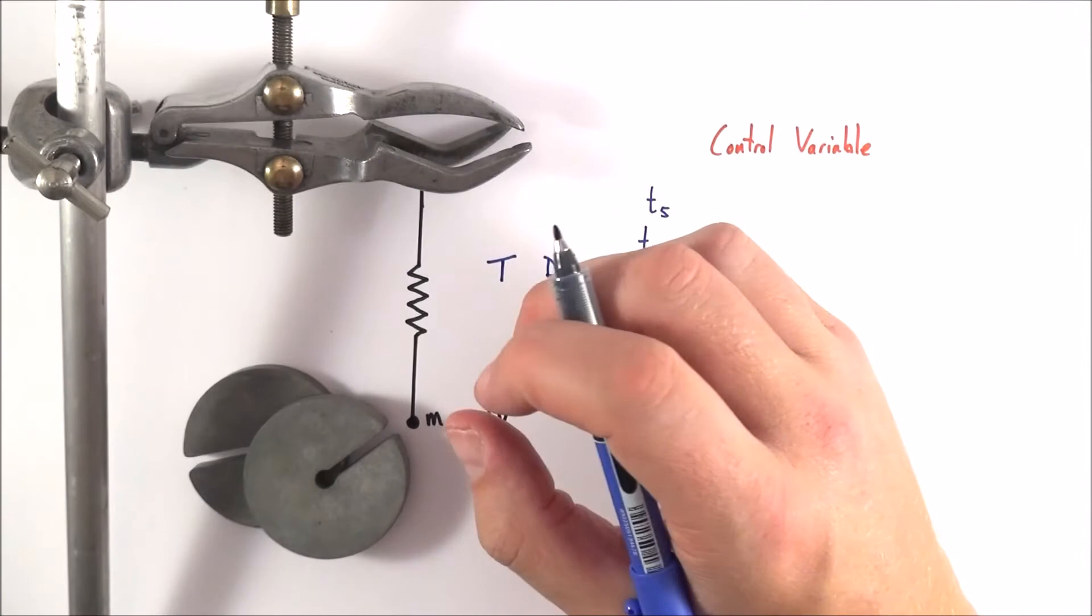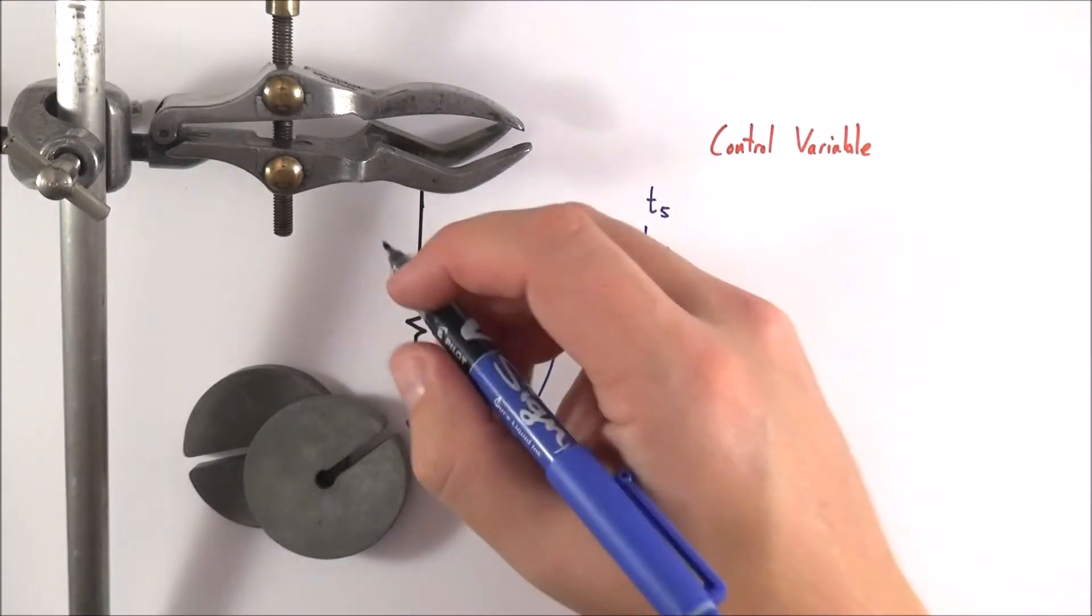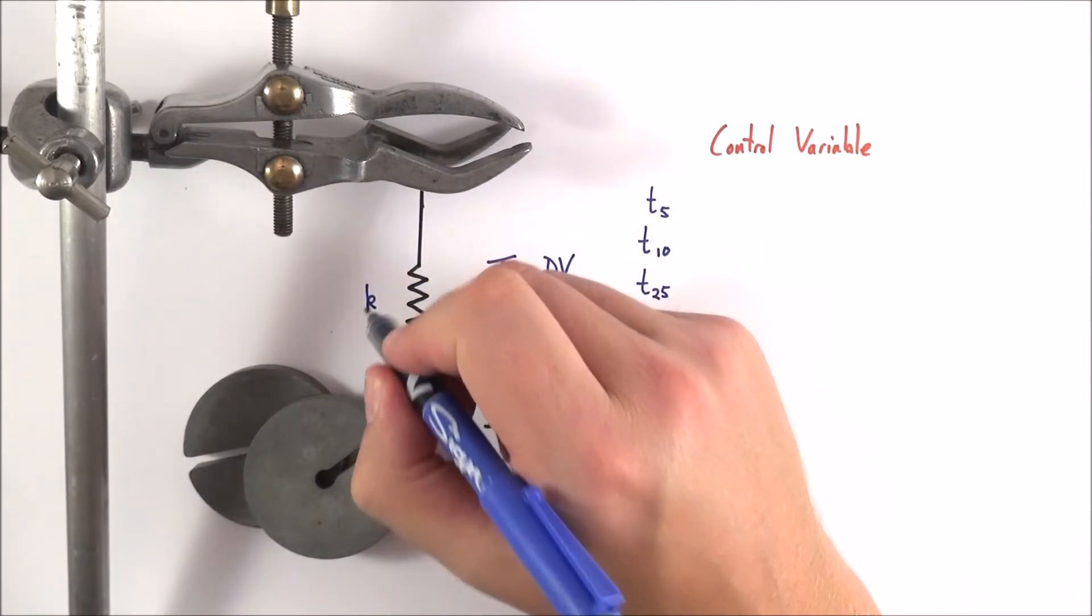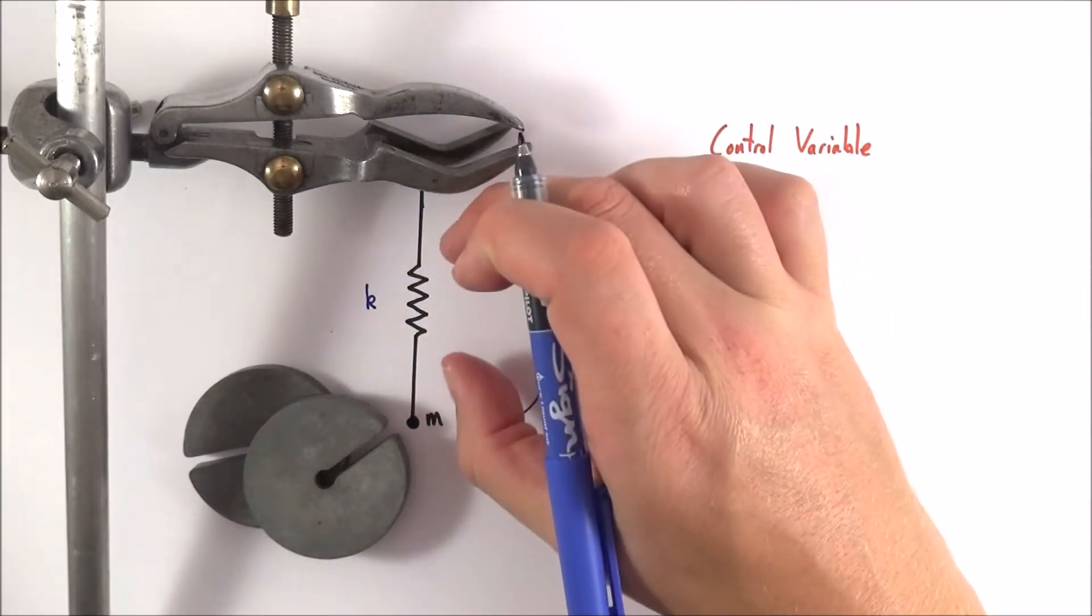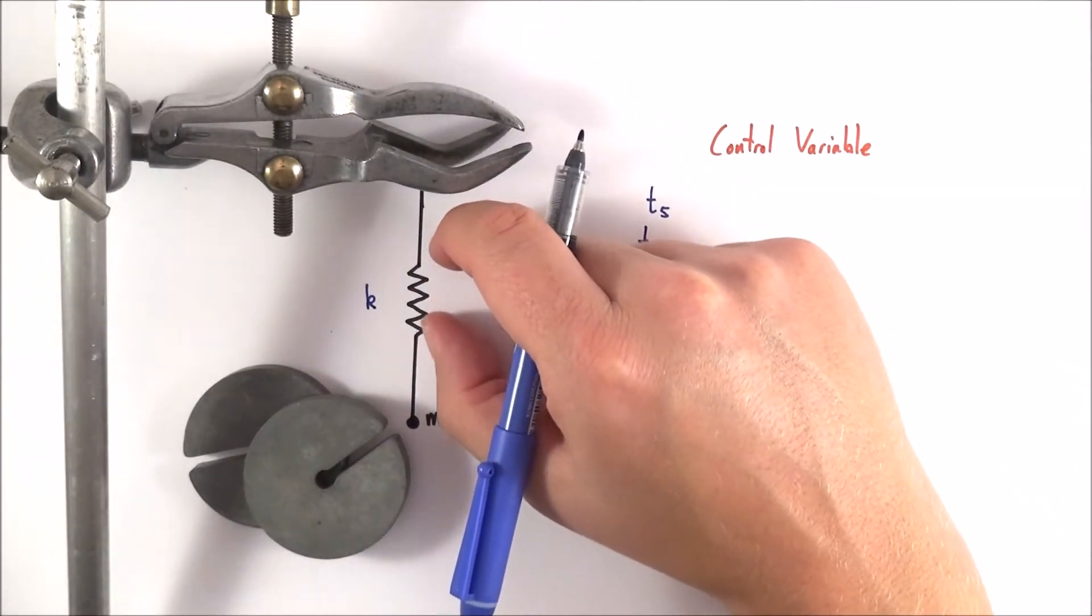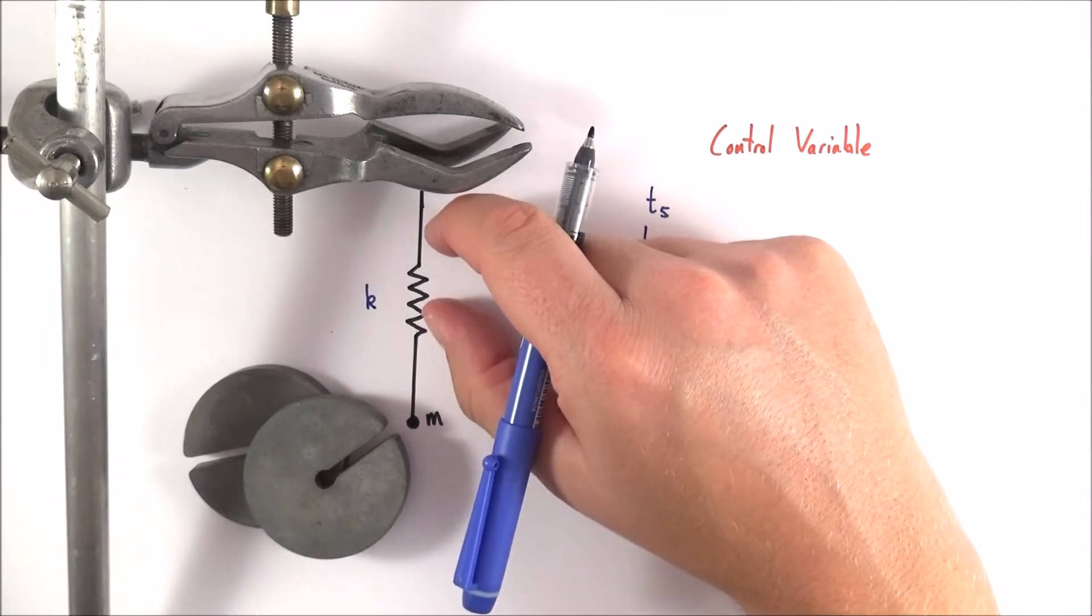What else might we want to check? Well we want to check that this spring has the same spring constant. Now the spring constant for a spring or the stiffness is little k. How do we check that this is constant? Well what you can do is you can basically look at the extension of this spring as you add different masses and at the end it should go back to its original length.